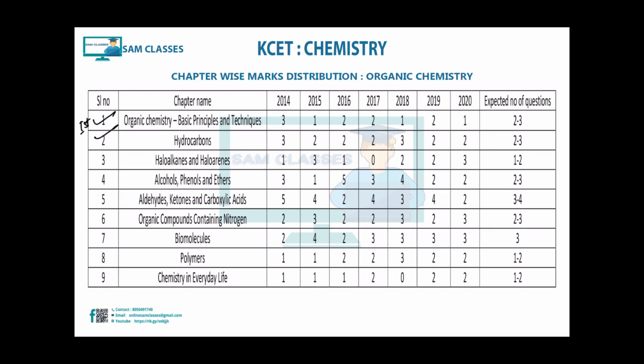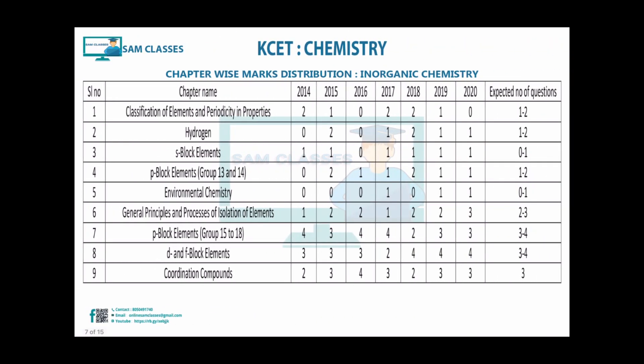For organic chapters, basic principles and hydrocarbons: around two to three each. Alcohols, aldehydes, and organic compounds containing nitrogen: one to two, fluctuating two to three each year - sometimes high, sometimes a bit low. Organic compounds containing nitrogen: two to three. Biomolecules: also very important, around three. A few chapters are deleted, which we will talk about separately.